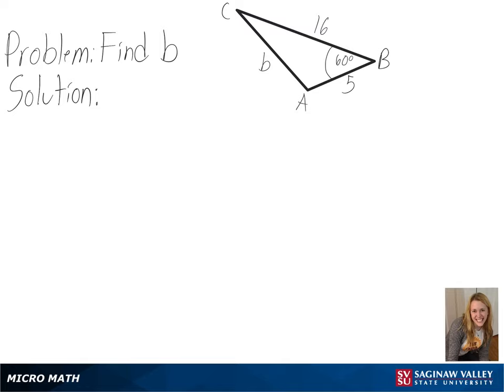Our problem is to find b. Looking at our triangle, we can see the values we know are two side lengths and the included angle. So to find the missing side length, we will be using the law of cosines.